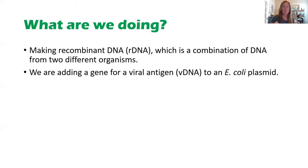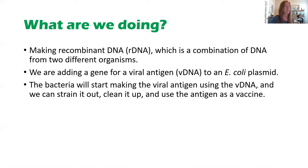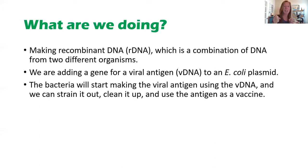We are specifically going to add a gene for one of the viral antigens and put it into a plasmid. We're going to use E. coli bacteria as our host. Once the bacteria take up the plasmid by transformation, we'll see the bacteria start making that viral antigen. Then, when we've got enough bacteria, we can crush them, extract the viral antigen, purify it, and use that as our vaccine.